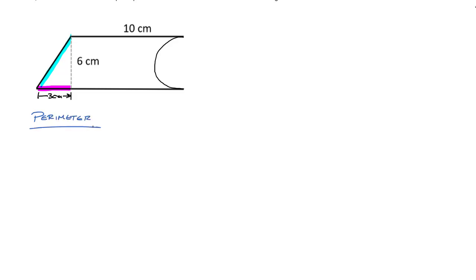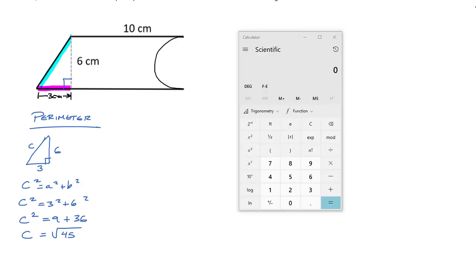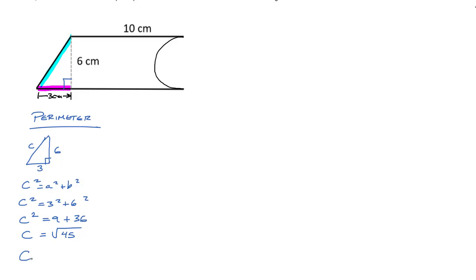Using the Pythagorean theorem — C squared equals A squared plus B squared — with A equal to three and B equal to six: C squared equals three squared plus six squared, which is nine plus 36 equals 45. Taking the square root of 45 on a calculator gives approximately 6.7 centimeters. That's the length of the hypotenuse from one corner to the other.